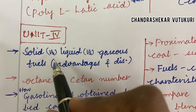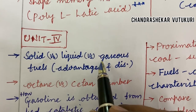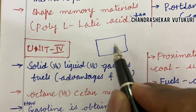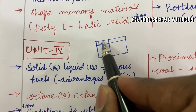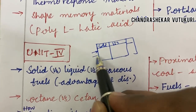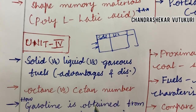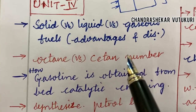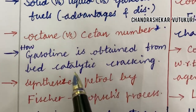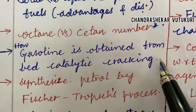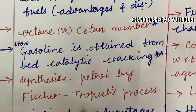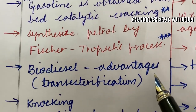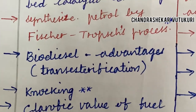Let's jump into Unit 4 — it is all about solid versus liquid versus gaseous fuels, their differences and advantages and disadvantages. When a comparison question is given, you are supposed to work it out in tabular column form, point-wise. Do not write answers in paragraph form — use good quality pens and write only in bullet points. Octane versus cetane number, their differences, and how gasoline is obtained from fluid catalytic cracking is a topmost question. Synthesizing petrol by the Fischer-Tropsch process is also a topmost question, which may occur in question 3, A or B.